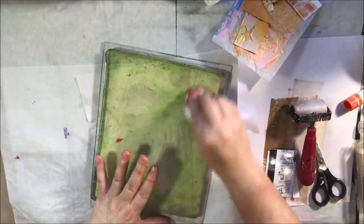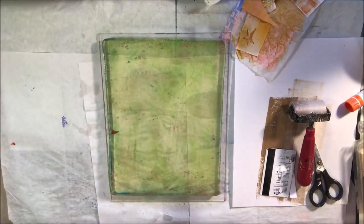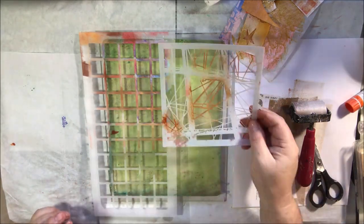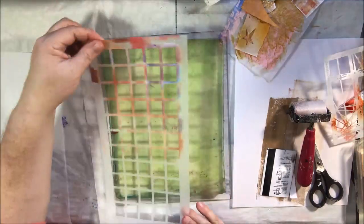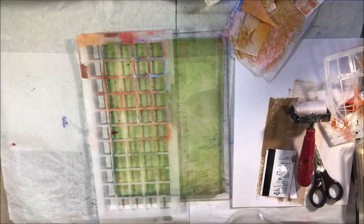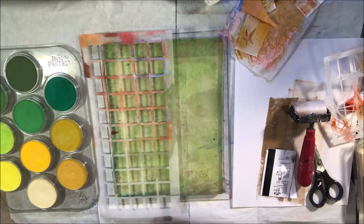If you use pan pastels or any type of pastels on your plate, it does get on there and keeps coming off every time for a long time. If you want to clean it off, just use some baby oil and a paper towel and just wipe it off. You can change colors or whatever. I wanted to make another sheet because I was planning on cutting out something.